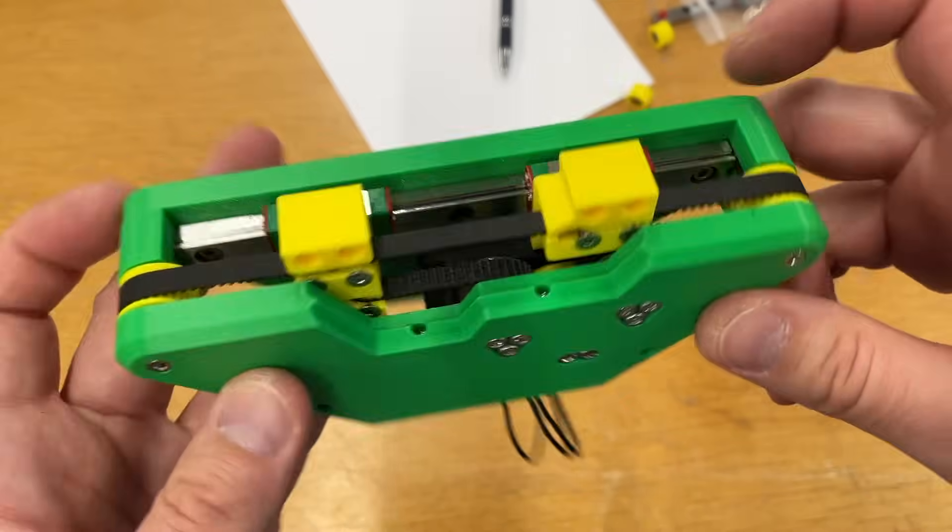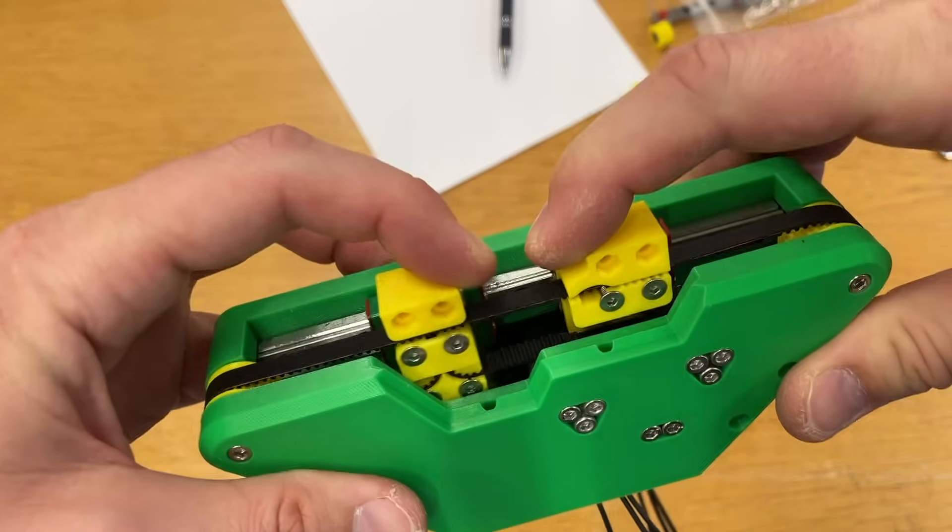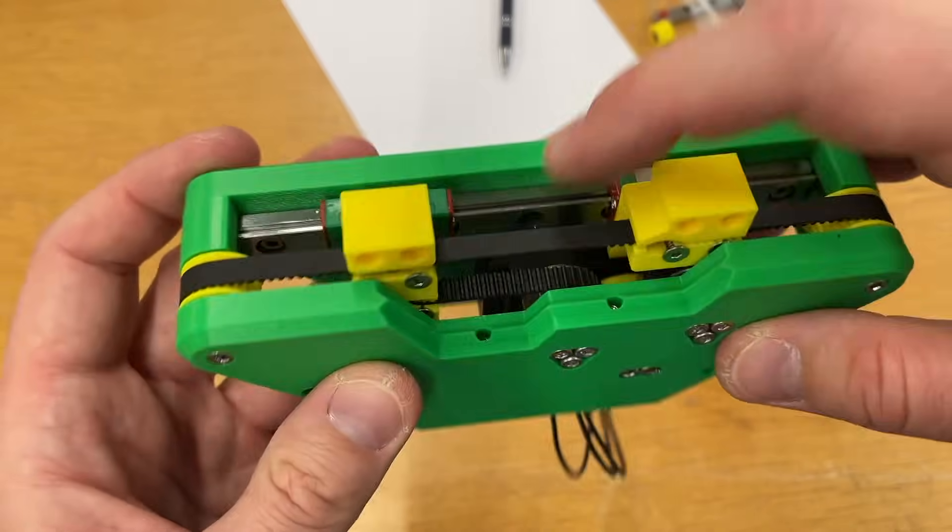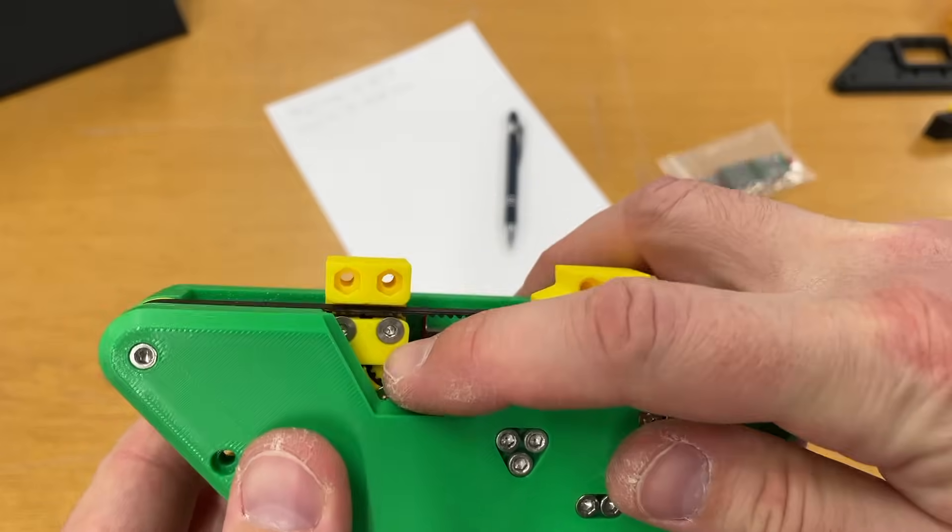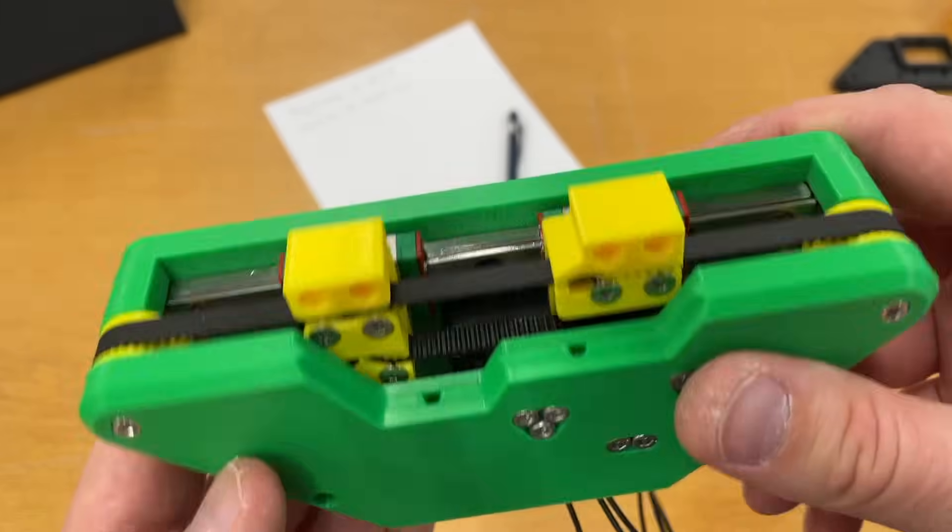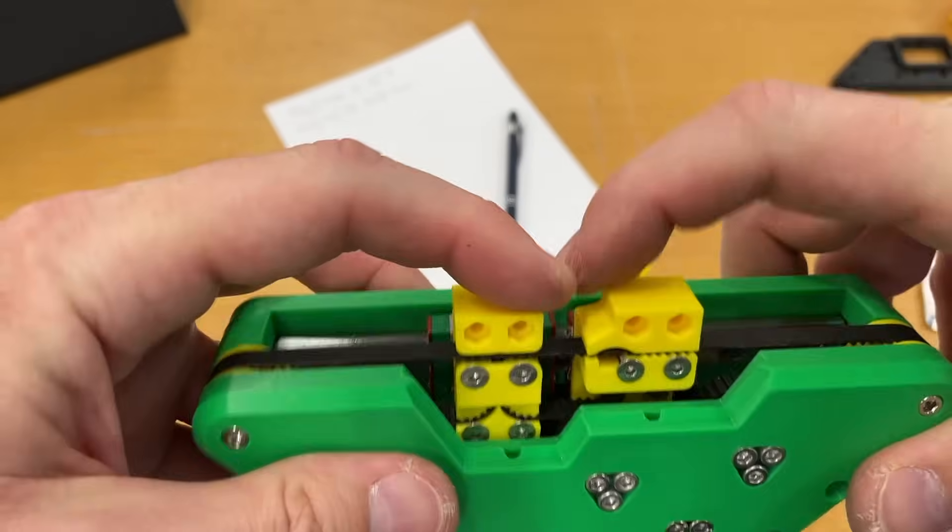I've assembled two pulleys and it seems like it works. But the belt is not properly tightened. I removed one teeth from the belt and reassembled everything. And now the belt is properly tightened. It works.